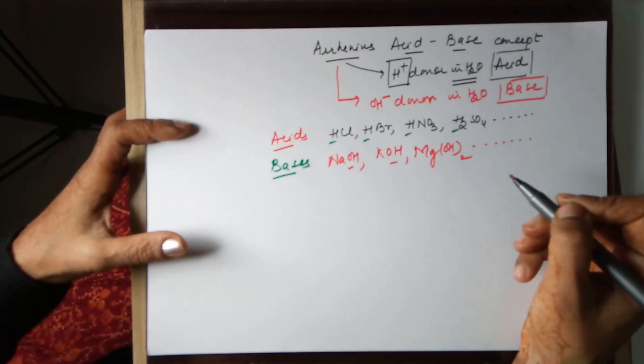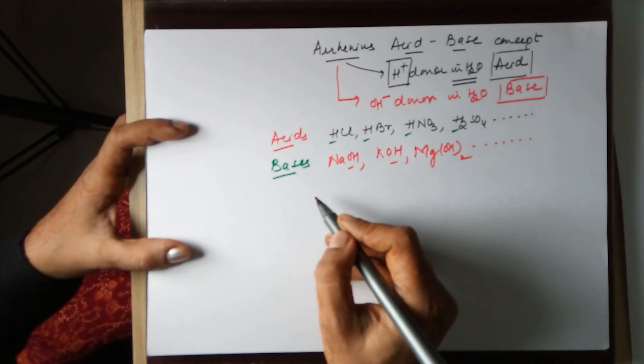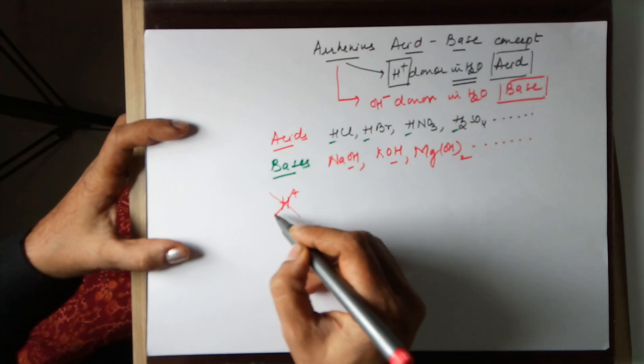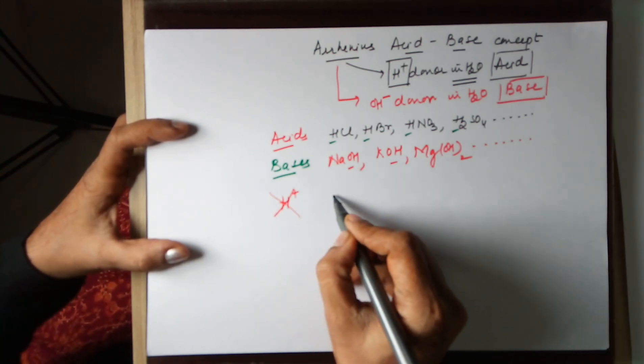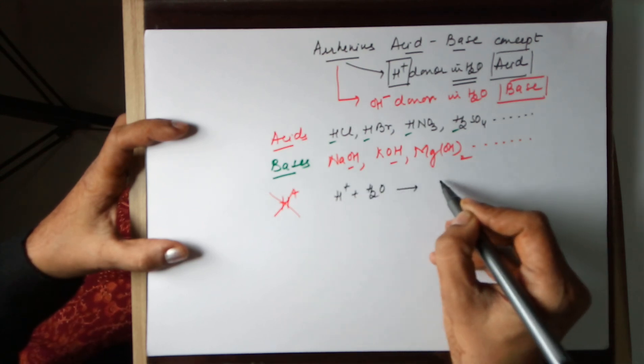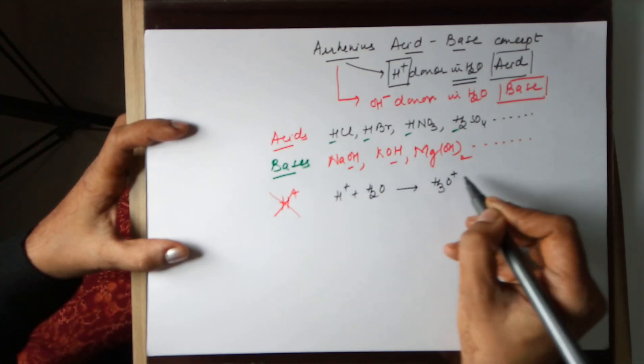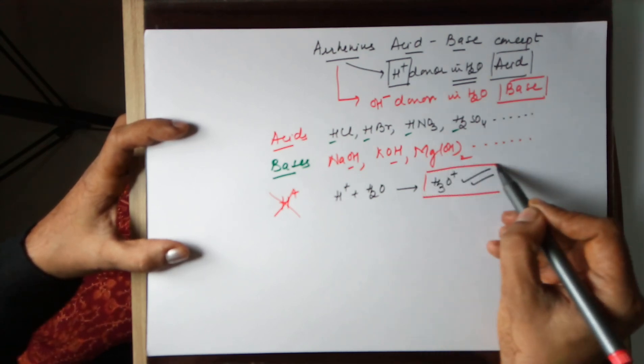Before I move ahead to the Arrhenius drawbacks, I would like to specify one thing. Writing H+ is not correct because nothing of this kind exists alone. H+ can only exist in the presence of water. Therefore, it's always correct to write H+ as hydronium ion.